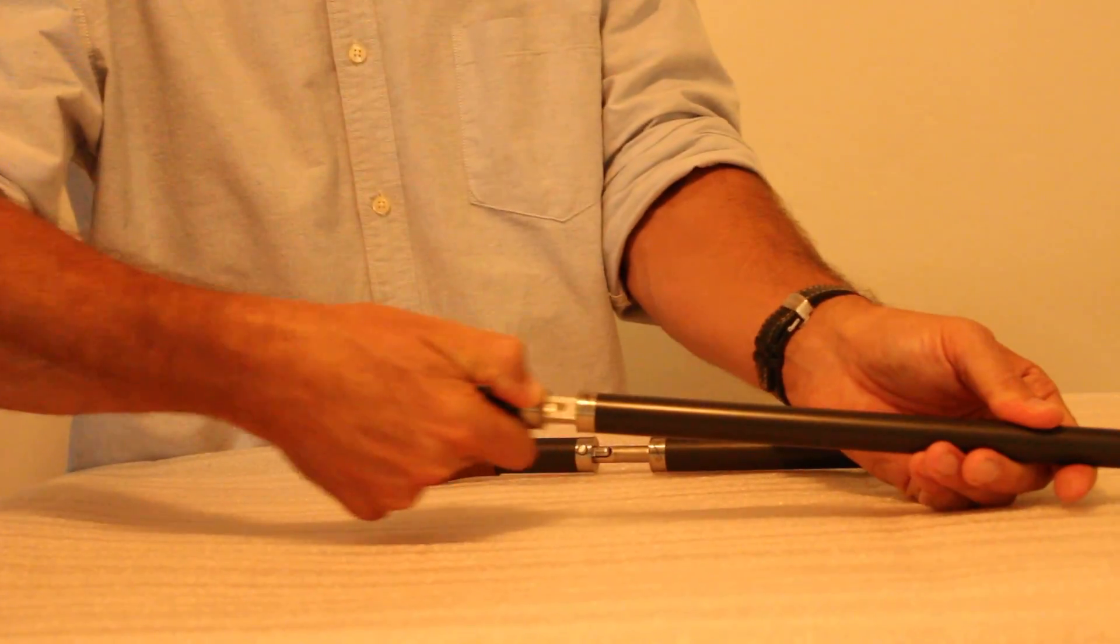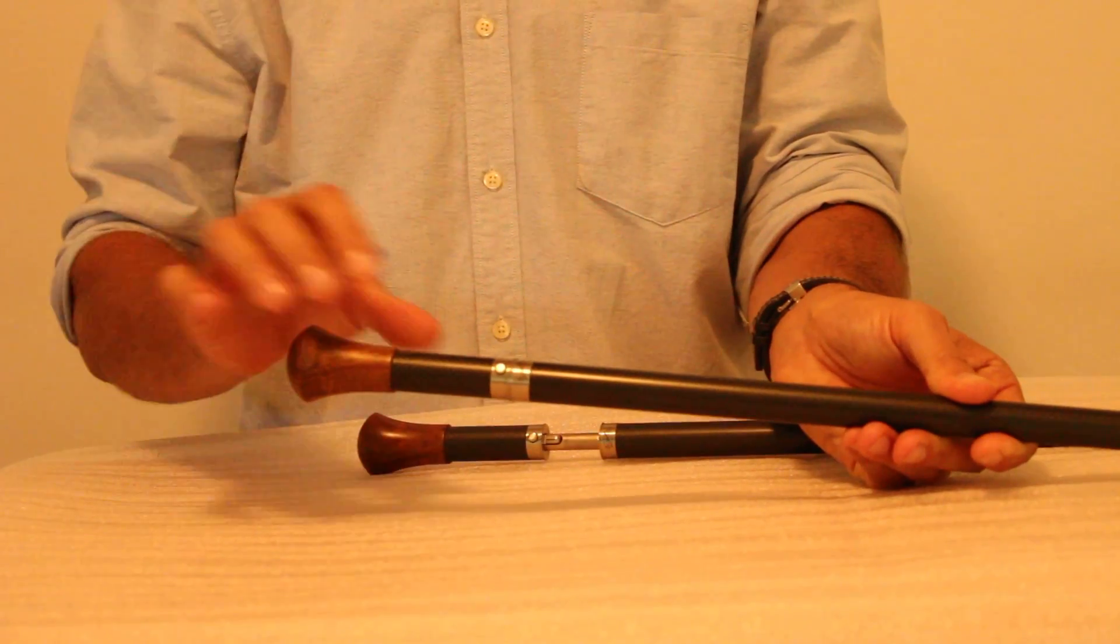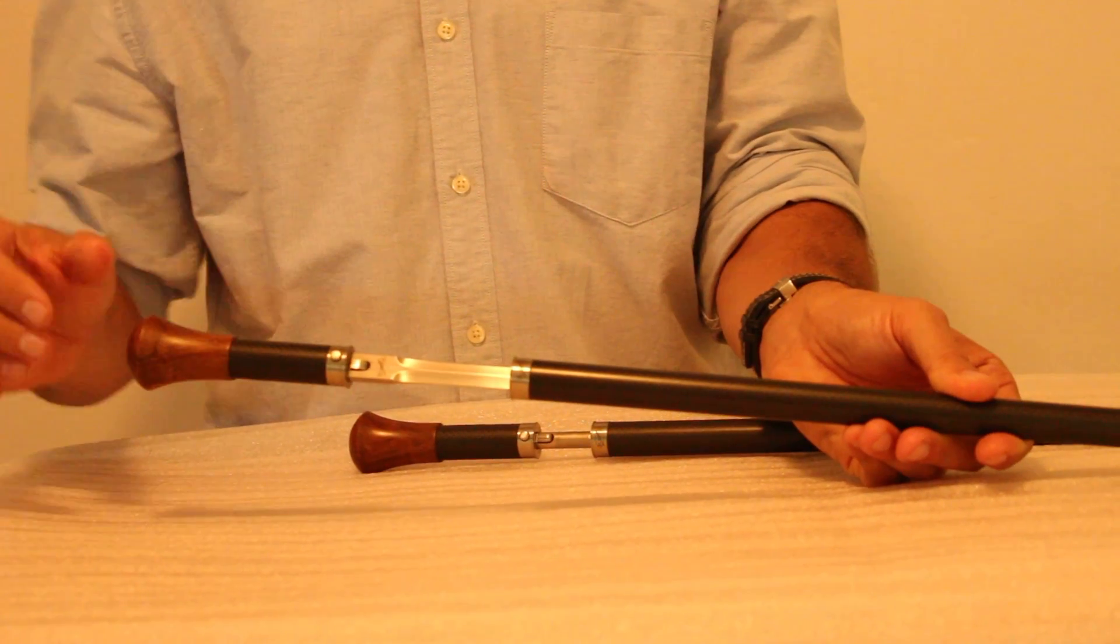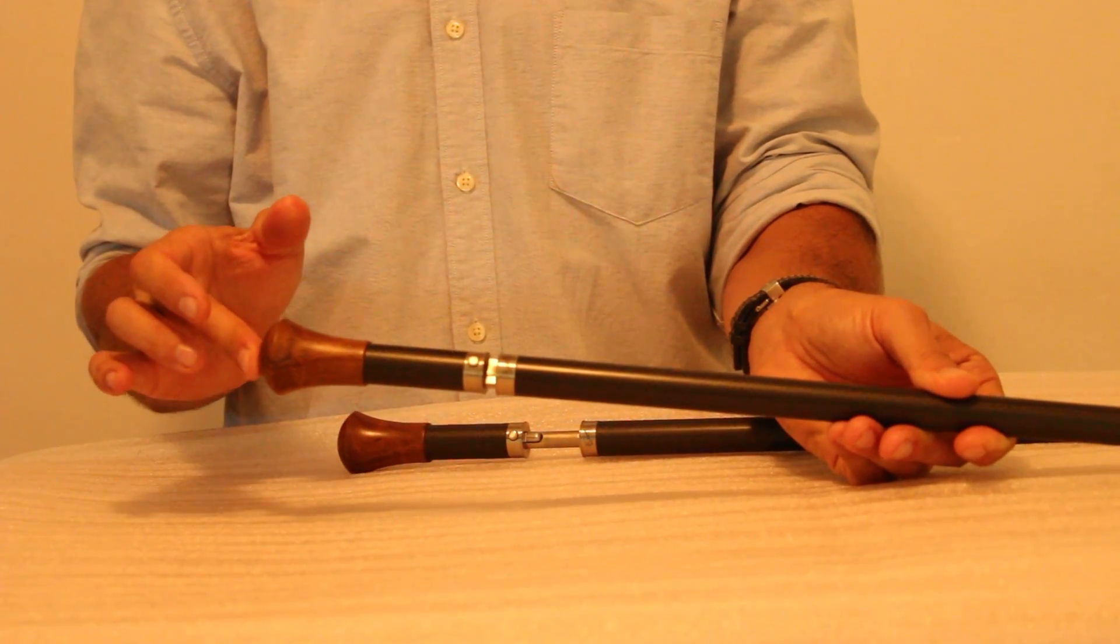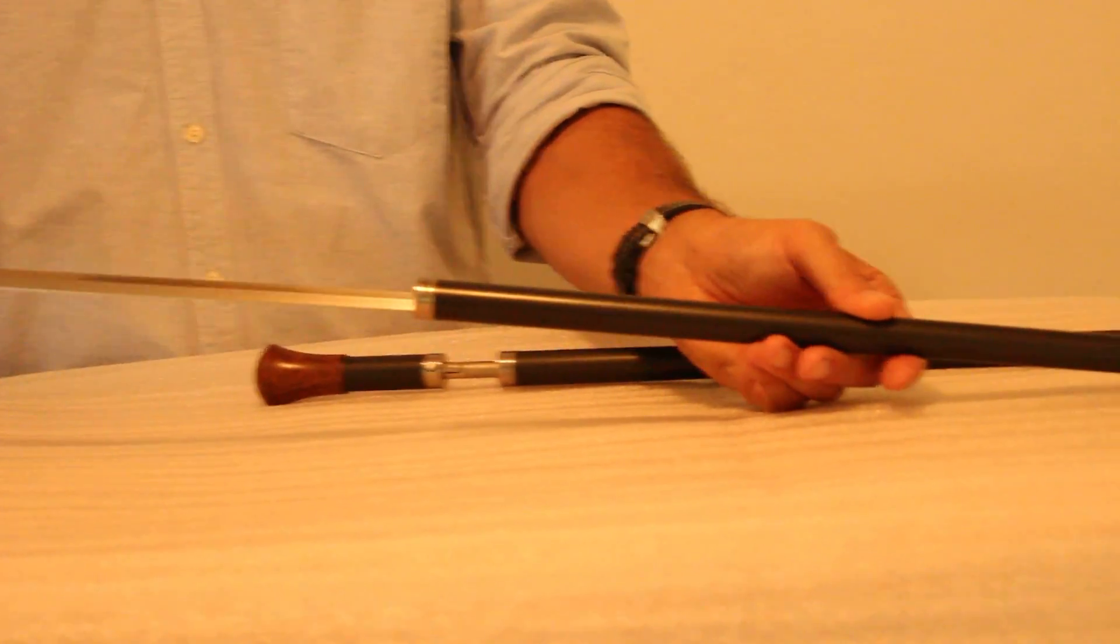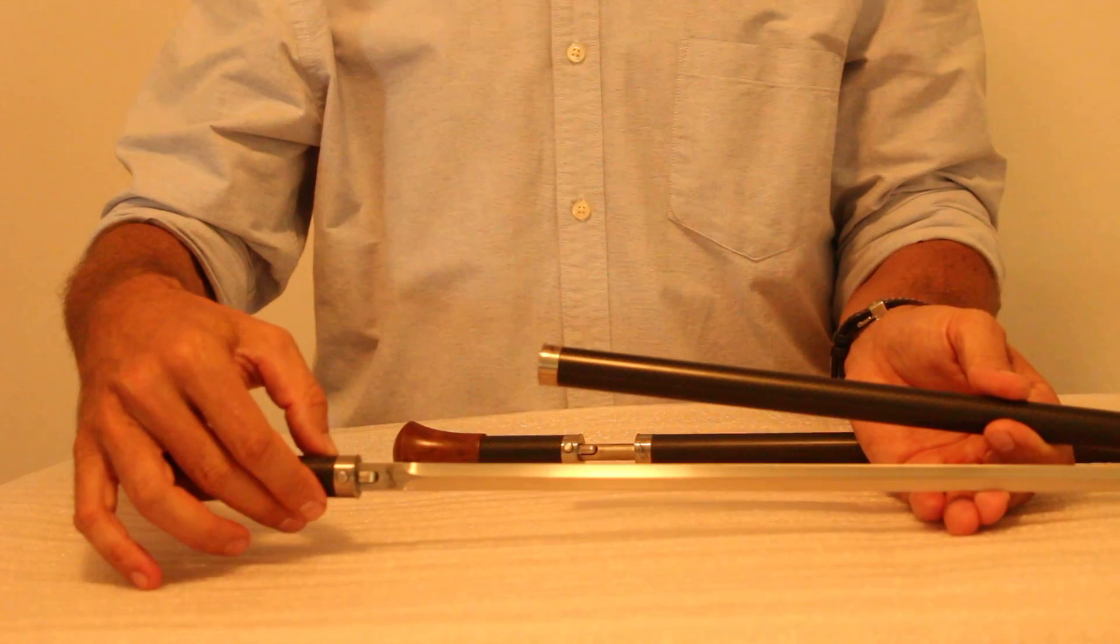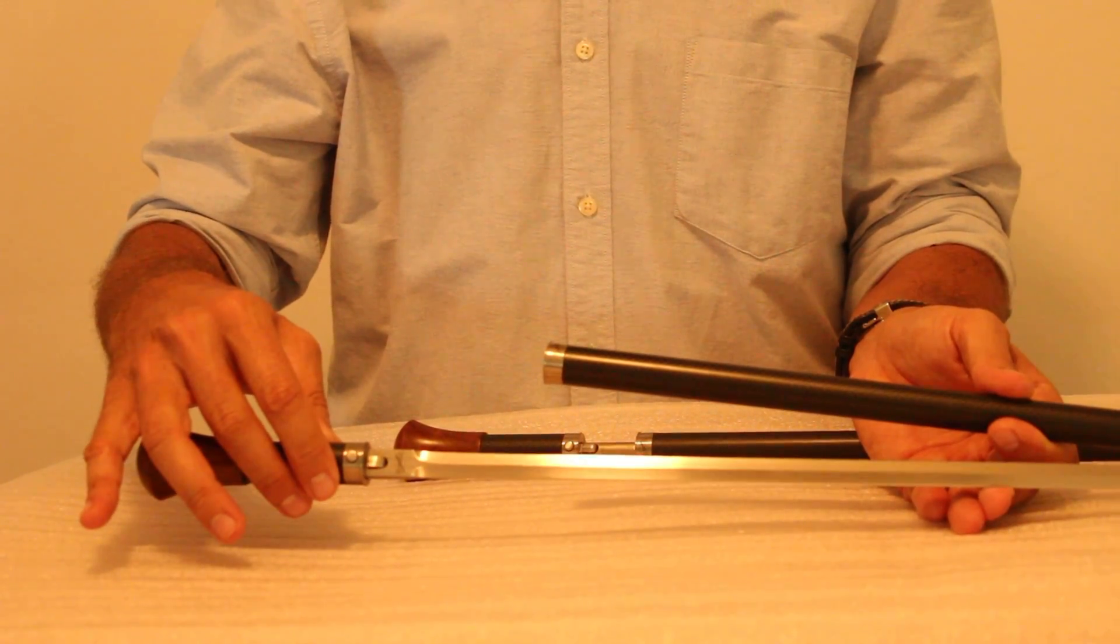Once again, functionality is definitely a little bit smoother in its locking action, just a little bit more precise. Obviously with the double-edged rapier blade we are getting a superior fit to the shaft and you've got a cutting edge on both sides.